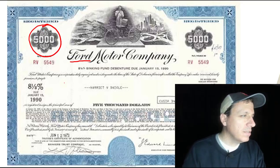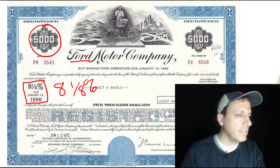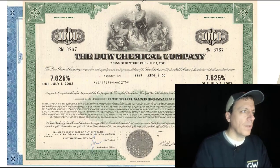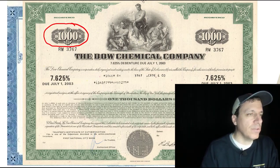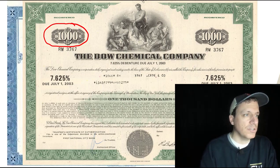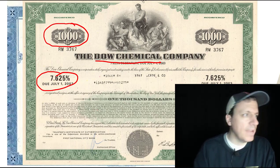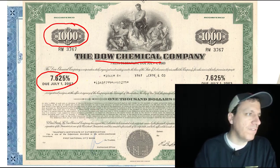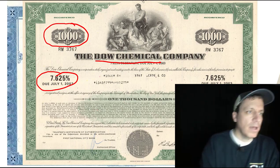Bonds will often have a coupon rate. This one is eight and one-eighth percent. This is one for the Dow Chemical Company. You'll notice similar things — it has a face value of $1,000. It's for Dow Chemical. This one has a different coupon rate — around 7.625%. This is the coupon rate that is paid on this bond.